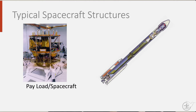Spacecraft are the actual craft that go into space and carry out missions. Examples are satellites, the Space Shuttle, the International Space Station, or the Soyuz capsule. They need help to get into space, but once there, they can maneuver themselves into place or even navigate and travel through space.